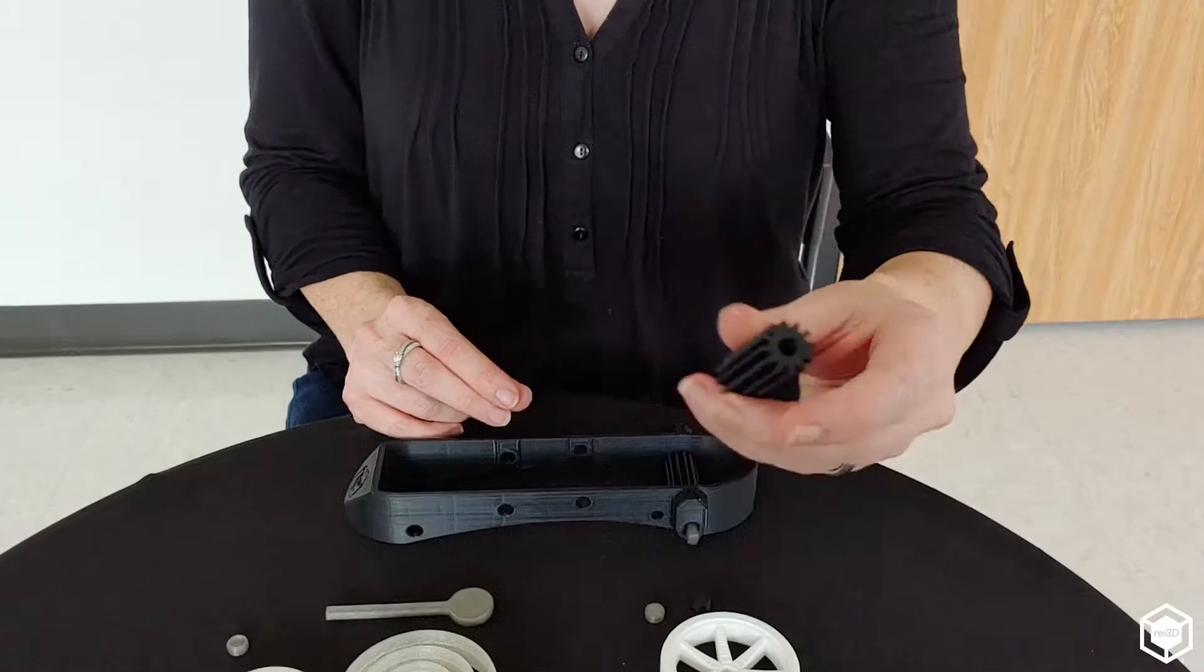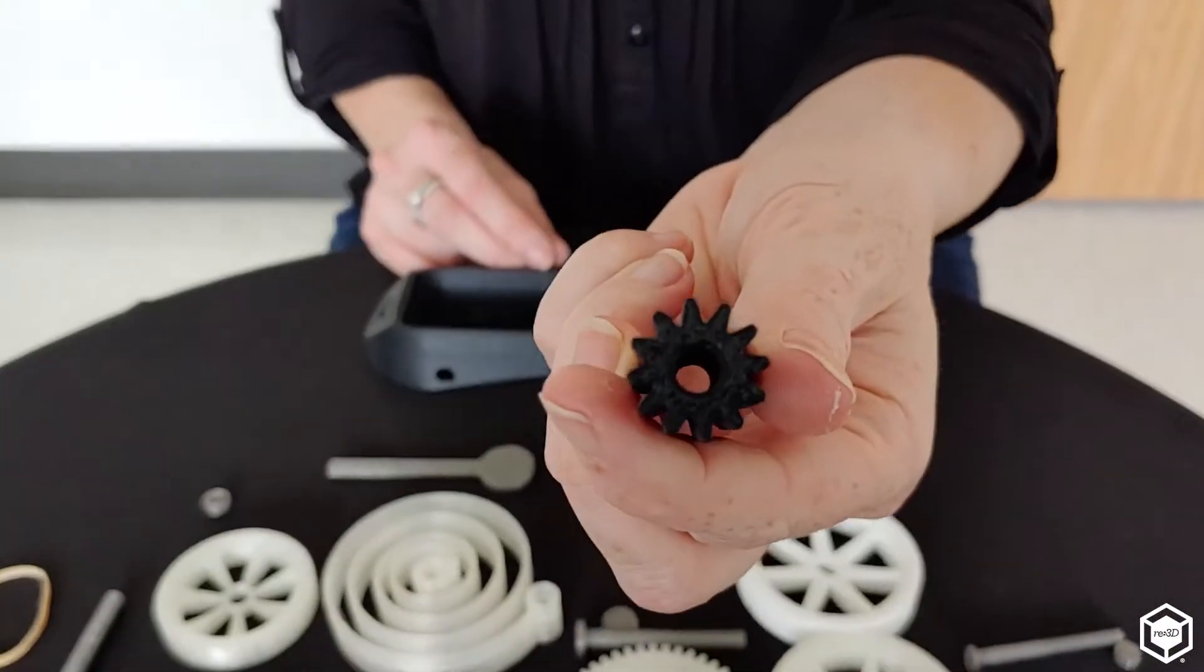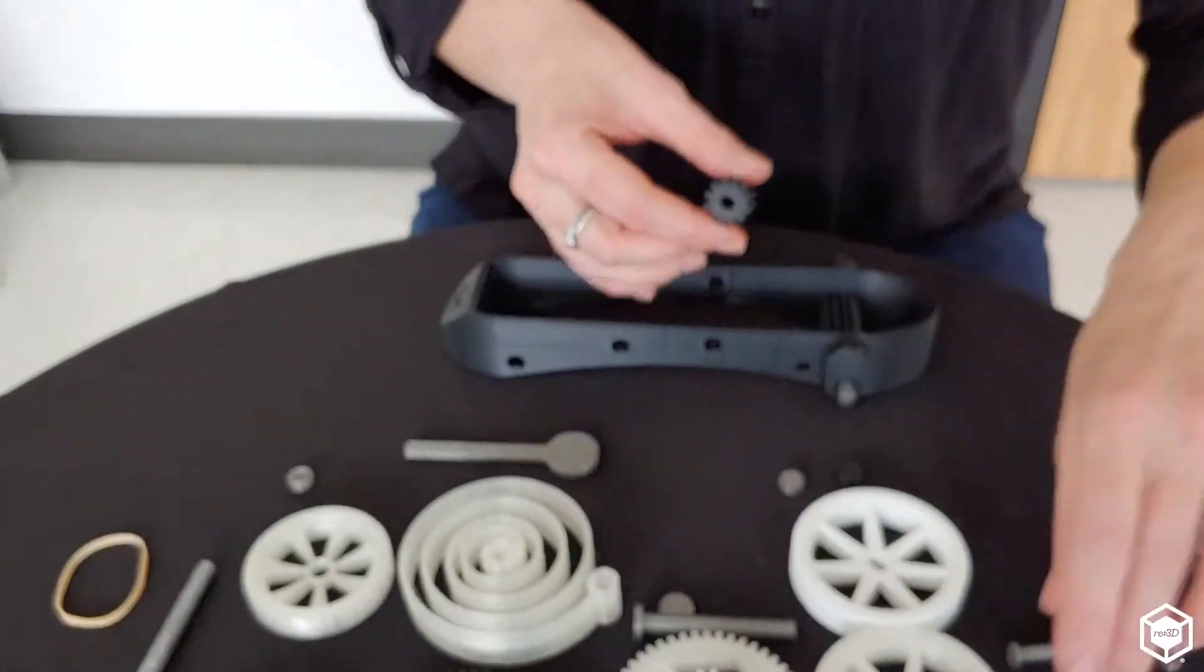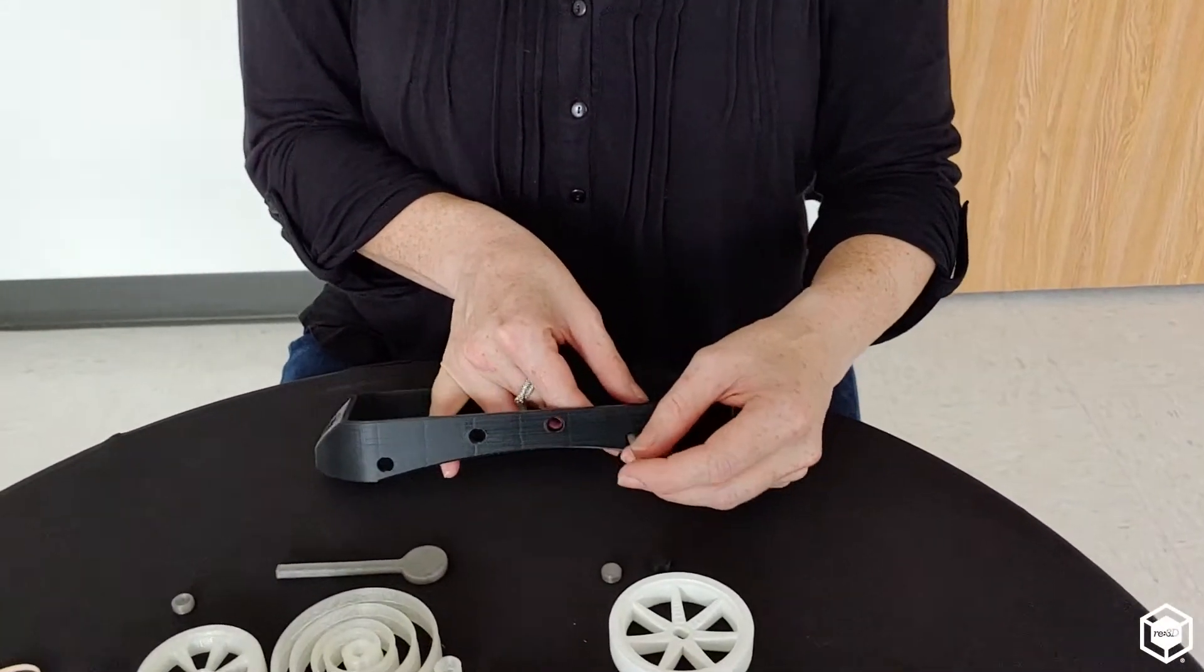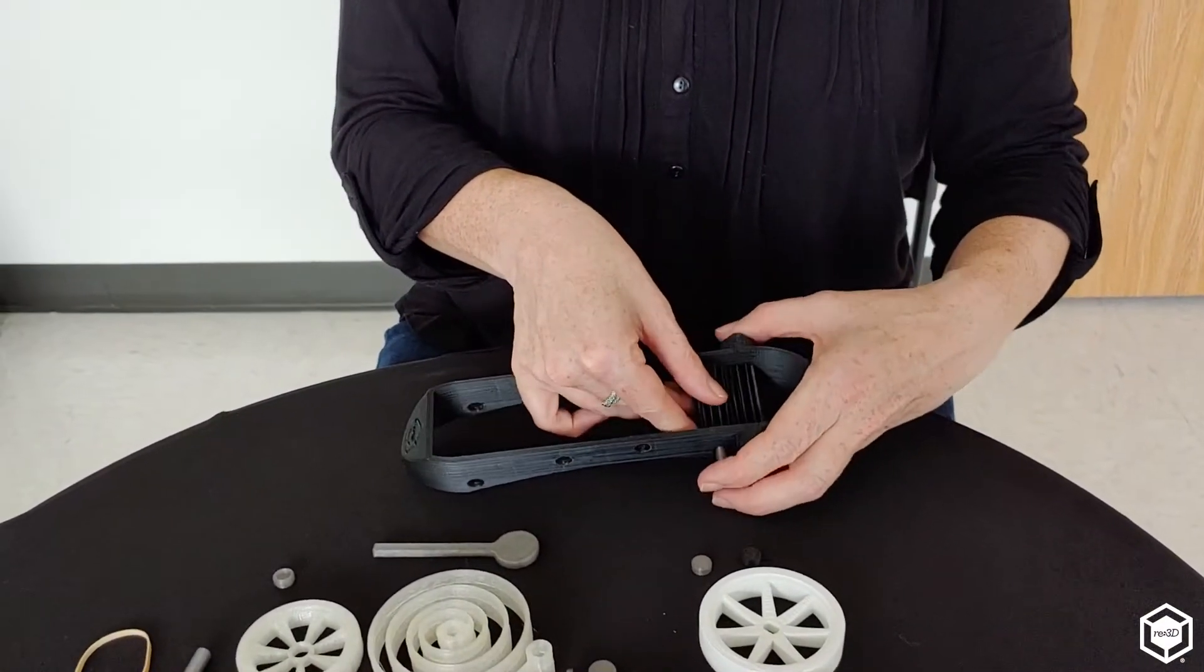We're going to take the next gear with the circular shaped hole and this small attachment. Put it through the next hole and out the other side.